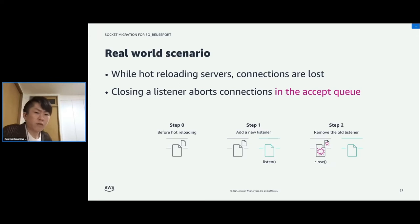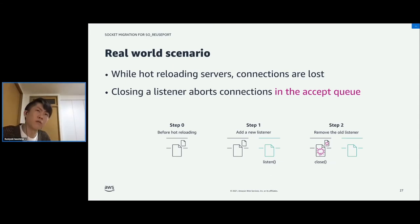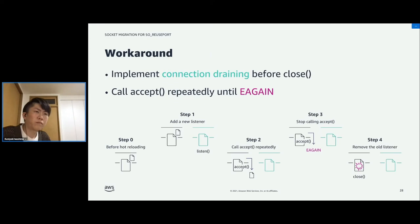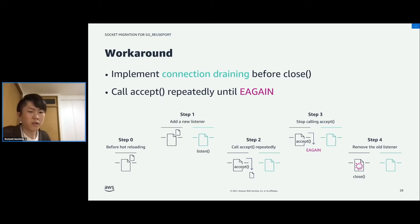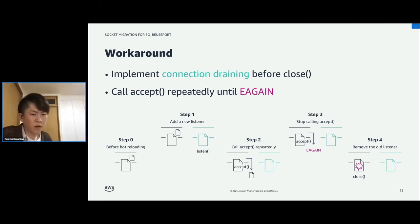This kind of situation happens when we lose server processes. When we close the listening socket, the connections in the accept queue are also lost. To avoid this problem, we have to do connection draining before closing the listener. Connection draining means calling accept repeatedly until we see EAGAIN, which means there are no connections in the accept queue. If we confirm that error, we can close the listener without aborting connections in the accept queue.